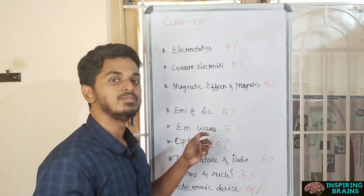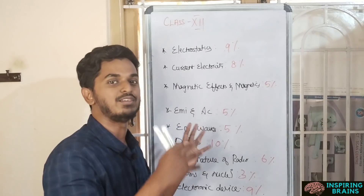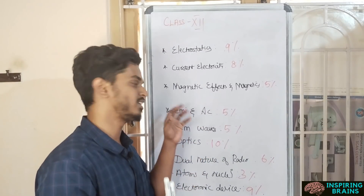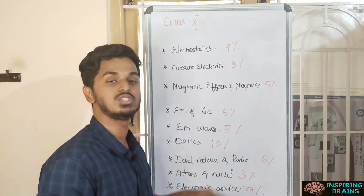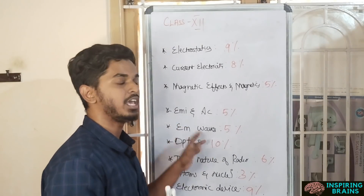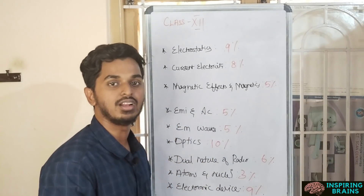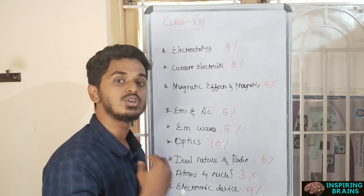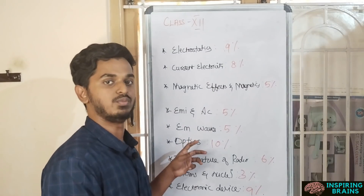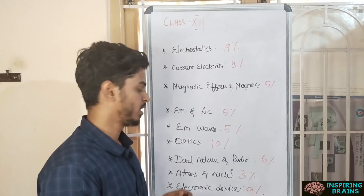For EMI and AC, if you have some attachment to waves — sine, cosine — you can go with EMI and AC, which is 5%. EM Waves is somewhat more theoretical, so those who are just starting can go with EM Waves.